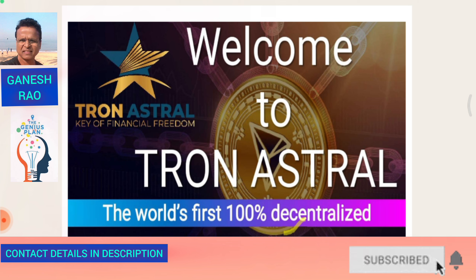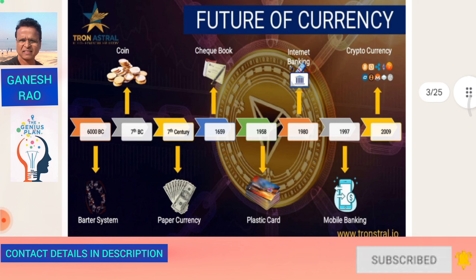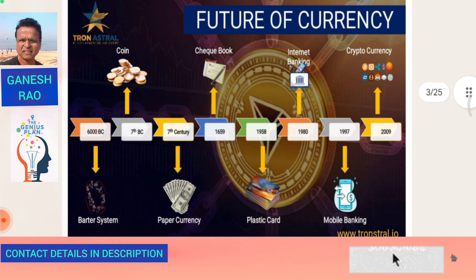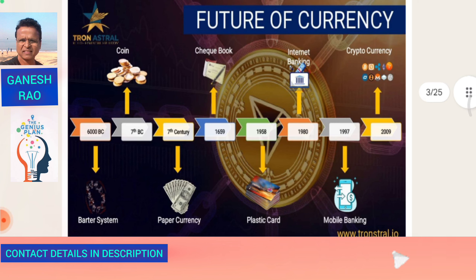The world's first 100% decentralized smart contract. You know, currencies have had a transformation since the beginning. Initially there was a barter system — you have a product like a horse and you want to trade it for a bull. That's how people used to exchange things, with no medium of exchange, around 6000 BC.